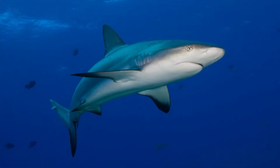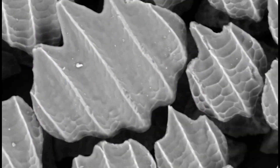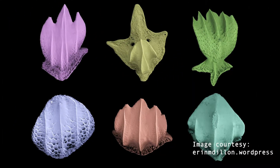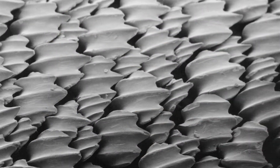Dermal denticles give shark skin a rough feel when you run your finger along it. This type of scale is a great material to reduce turbulence and drag, making sharks great swimmers. Hence, many swimsuits were designed to replicate this material to help swimmers glide through water faster. Unlike other scale types that grow larger over time, dermal denticles stop growing once reaching a certain size, but more denticles are added as the fish grows.